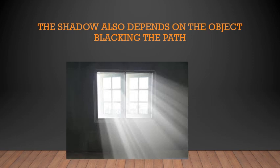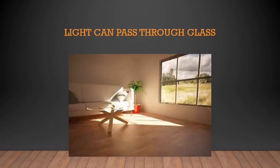The shadow also depends on objects blocking the path. It is not only about the shape of the object, how bright the light is, or in which direction the light is — the shadow also depends on the object blocking the path of the light. Light can pass through glass, for example windows. Even if you close the window, there will be bright light in your house if the house is directly facing the sun.